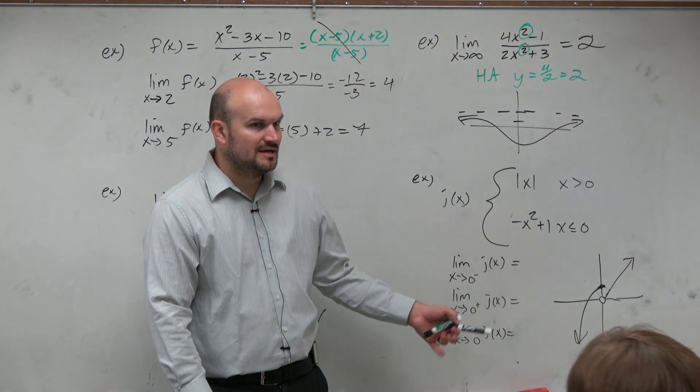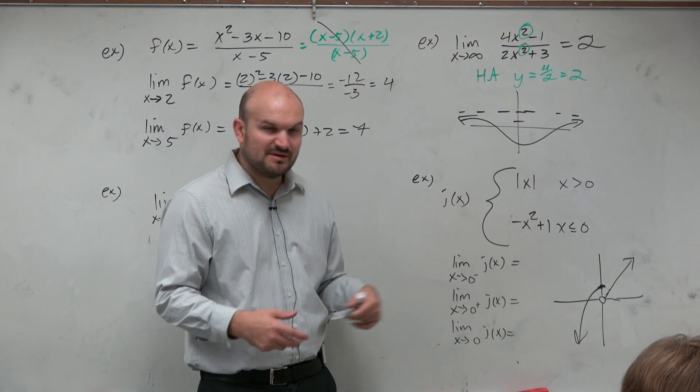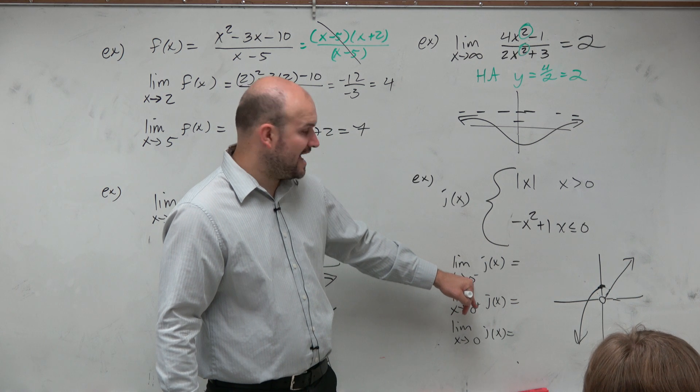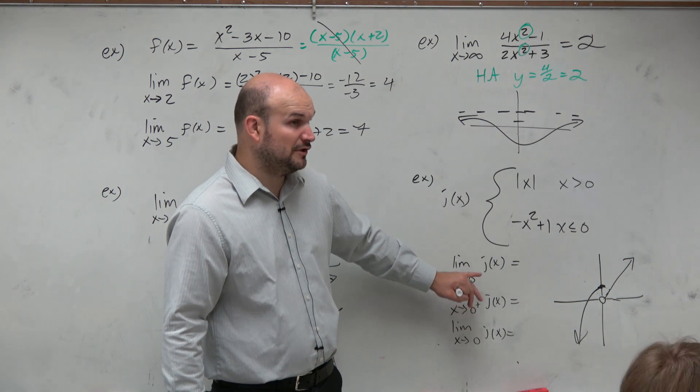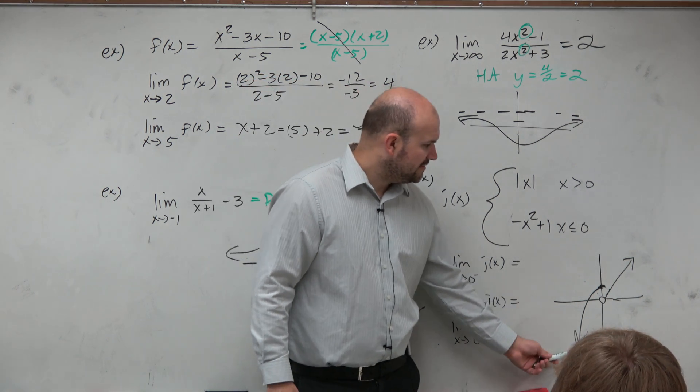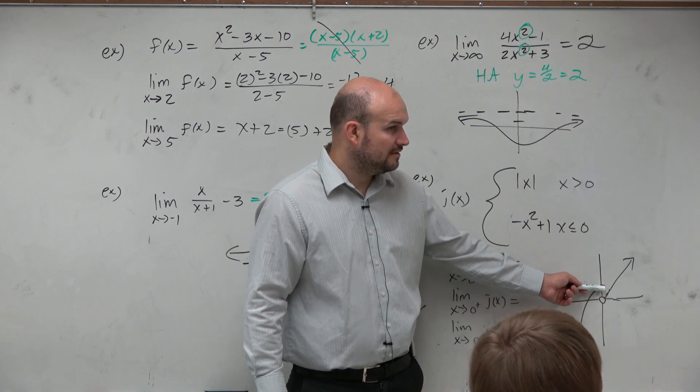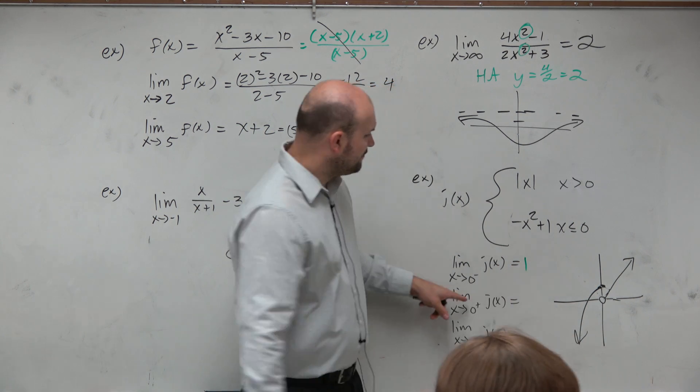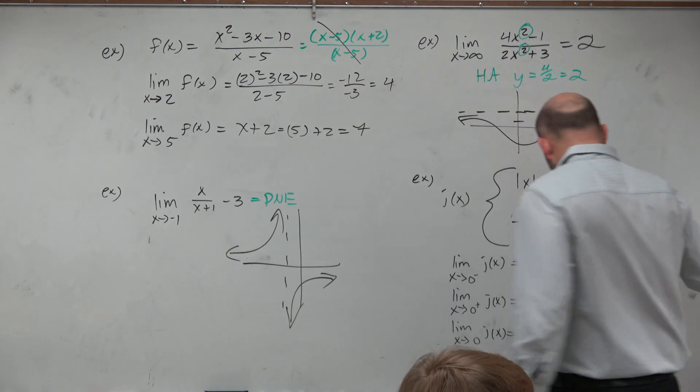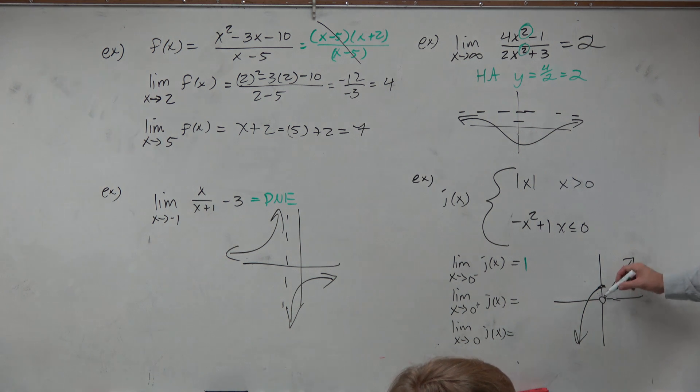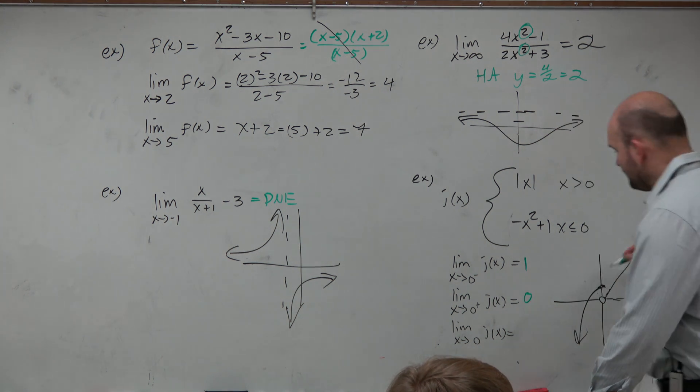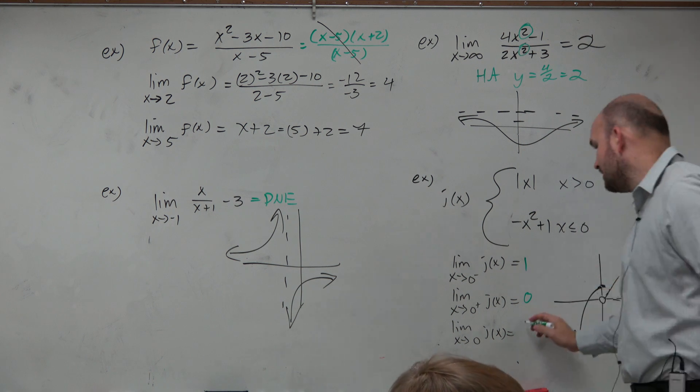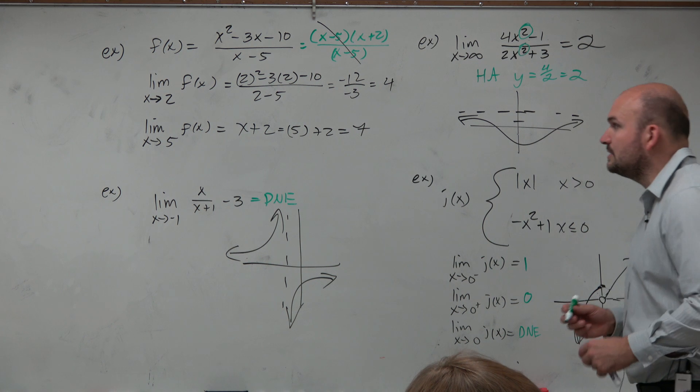So now, having to understand the graph, now it's much easier to understand the limits. The limit of j of x going to 0, so as we're getting really close to 0 from the left, as we get really close to 0 from the left, we are approaching 1. From the right, as we're getting really close to 0, we are approaching 0. And from the left and the right, are we going to the same spot? No, so therefore it is a does not exist.